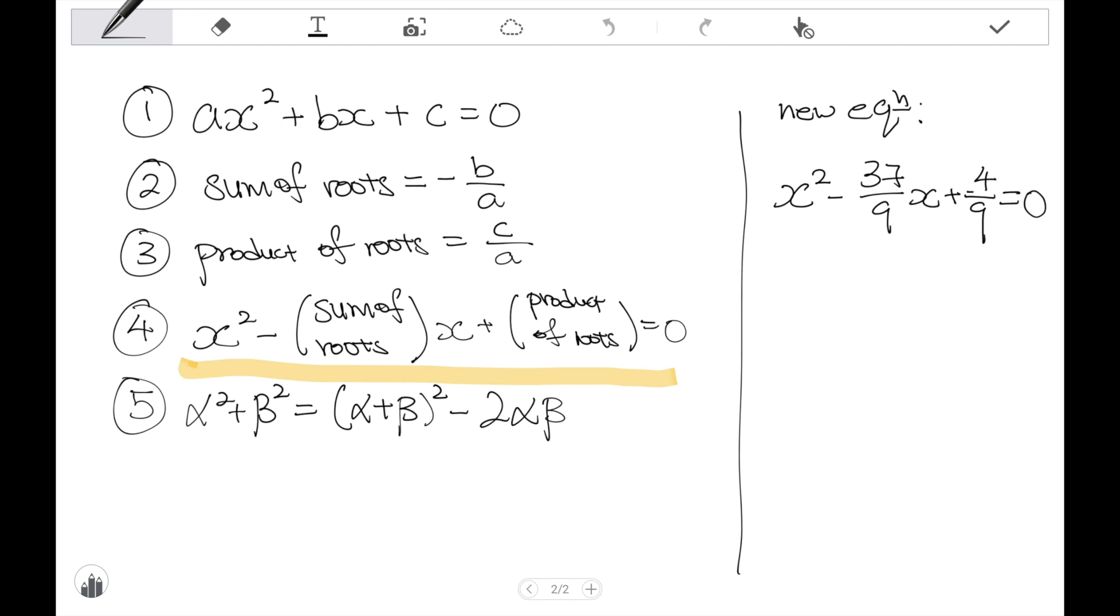So, the final step is to multiply through out by 9, including the 0 as well. Which will give me 9x squared minus 37x plus 4 equal to 0. Because 0 times 9 gives me 0. And this is my new quadratic equation.